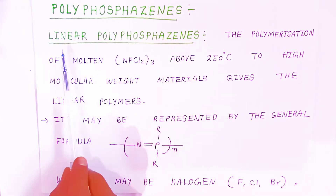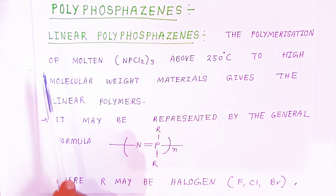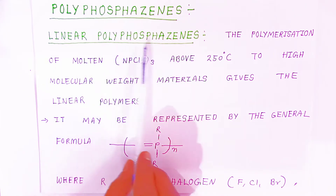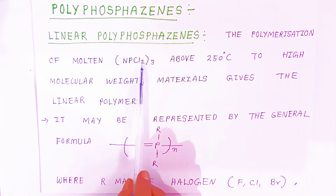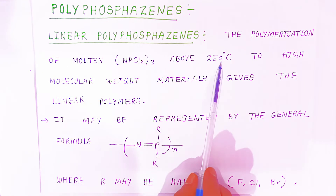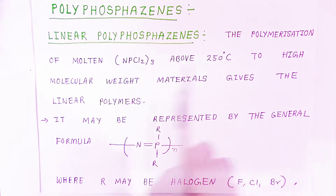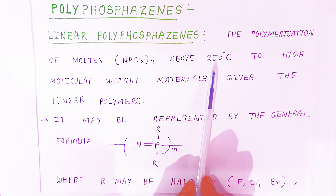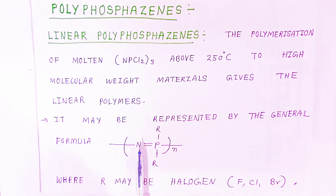Polyphosphorgens. In this segment we are going to see the linear polyphosphorgens, that means they are connected in a linear way. The polymerization of molten NPCl2 at about 250 degrees Celsius to high molecular weight materials gives the linear polymers. This way it will polymerize and form the linear polymers at 250 degrees Celsius. It may be represented by the general formula nitrogen-phosphorus double bond, with n repeating units.